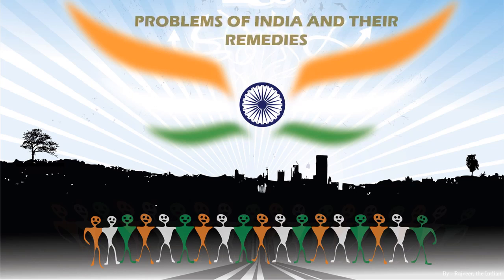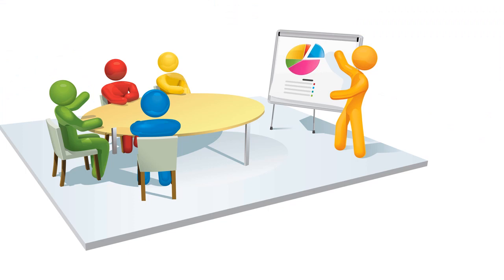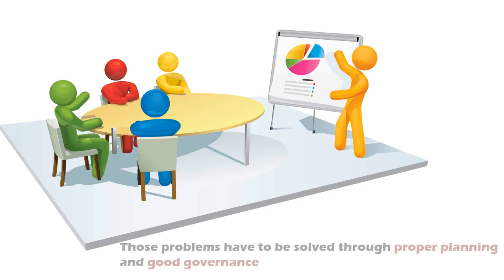Problems of India and Their Remedies. Since 1947, we have been facing a number of problems both internally and externally. Those problems have to be solved through proper planning and good governance. In our democratic system, people have to cooperate with the government at central, state, and local levels in order to find solutions to these problems.